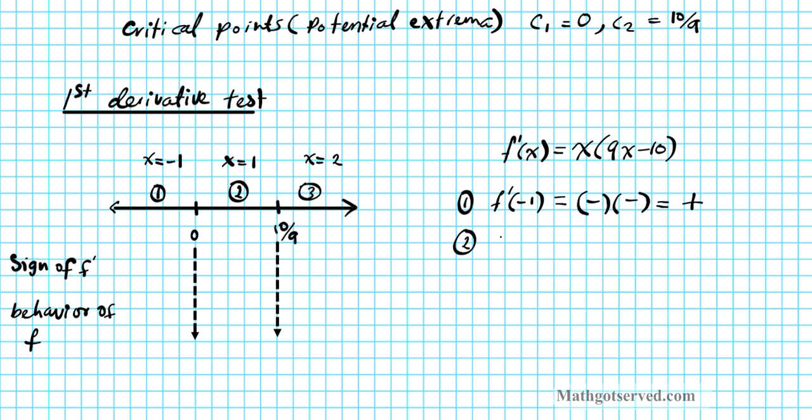Interval 2, f prime of 1. If you plug in 1 in here, you're going to have a positive number. If you plug in 1 in here, you have a negative number, namely negative 1. Positive times negative is negative. Interval 3, f prime of 2. If you plug in 2 in here, you have positive. If you plug in 2 in here, you have positive. Positive times positive is positive.